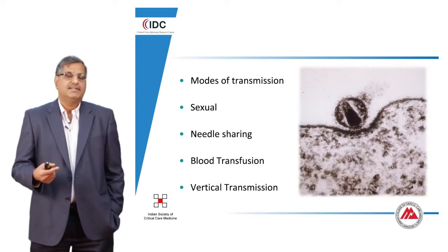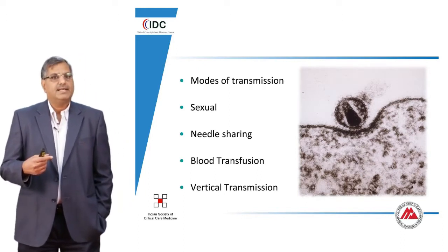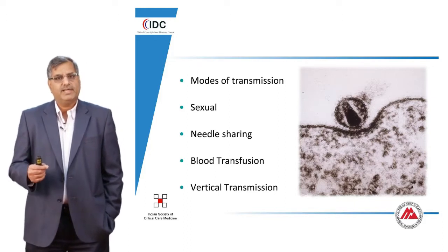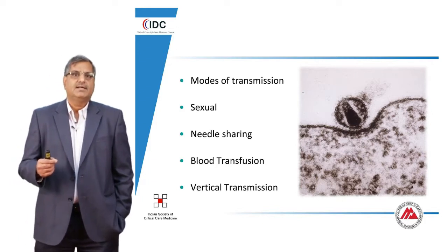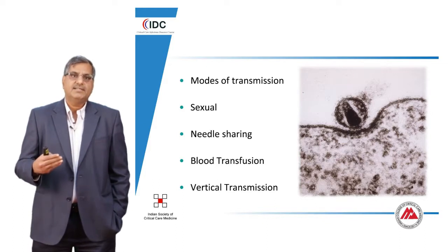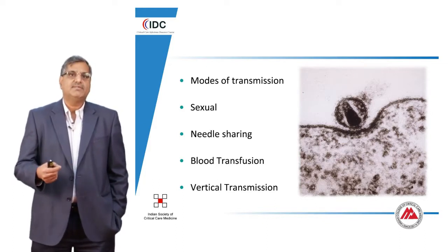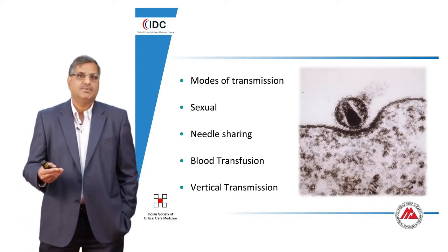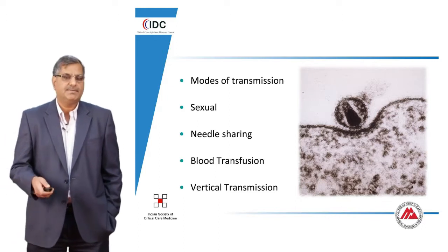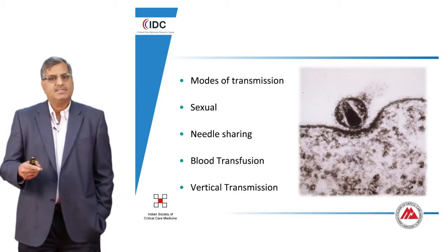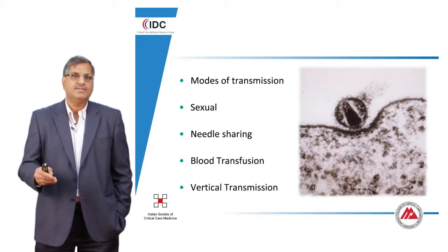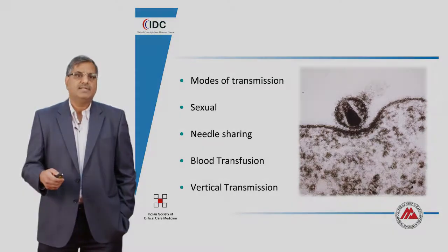Blood safety has improved, and needles and syringes are now used as disposable. The only scenario where you may get HIV through infected needles and syringes would be IV drug abusers who are sharing the same needle and syringe and injecting into their venous system. They are transmitting not only HIV but other blood-borne infections like hepatitis B and hepatitis C. The mother-to-child HIV transmission is now not a major concern because with effective anti-HIV medication, we can reduce mother-to-child transmission to nearly less than one percent.